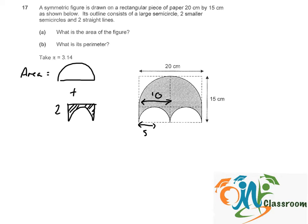First of all, let's find the area of the big semicircle first. This would be half times pi, which is 3.14 times the radius, times the radius. It will give us 157cm squared.